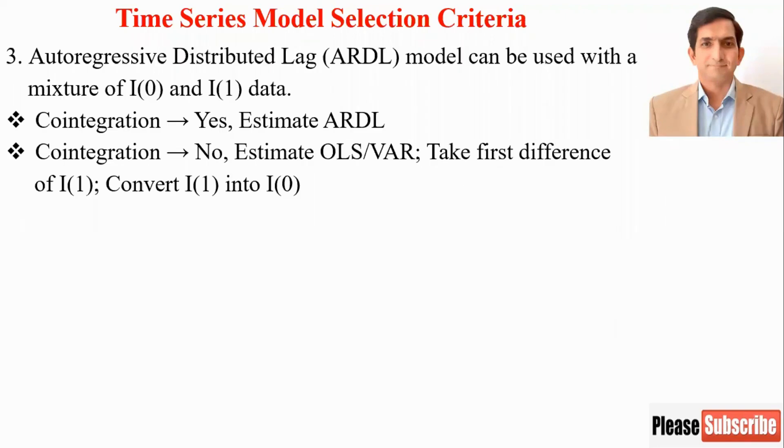Case three: if you have a mixture of I(0) and I(1), then go for Autoregressive Distributed Lag model (ARDL). You have to check cointegration. If a cointegration equation exists, estimate ARDL. If there is no cointegration, then estimate OLS or VAR.